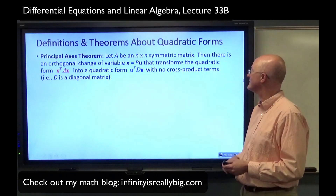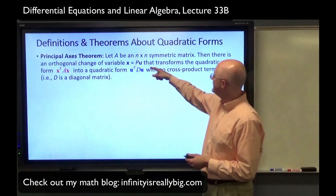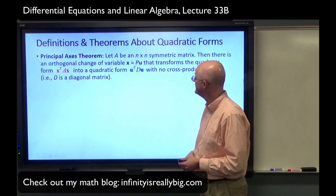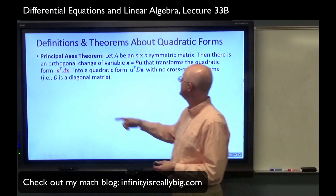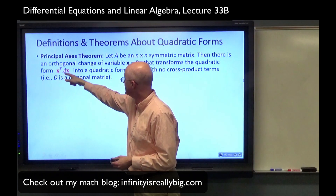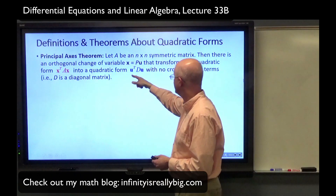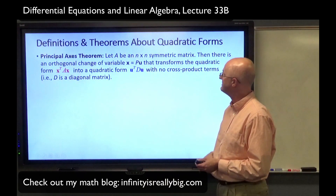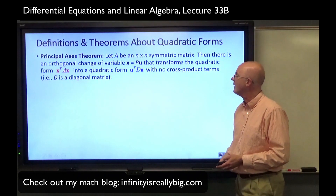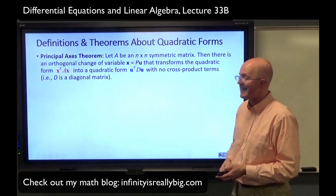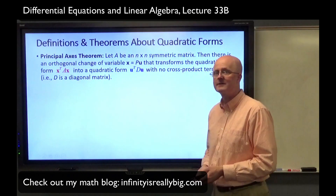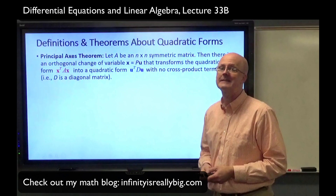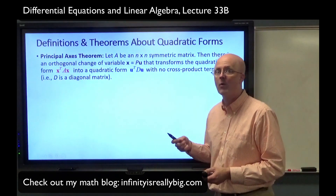Essentially, there is a change of variable. P is an orthogonal matrix whose inverse is its transpose. That converts this quadratic form X transpose AX into a new quadratic form in new coordinates, U transpose DU, with no cross-product terms. In other words, D is a diagonal matrix. We have orthogonally diagonalized A to a new coordinate system where there are no cross-terms, making it much easier to tell whether it's positive definite, negative definite, or indefinite.